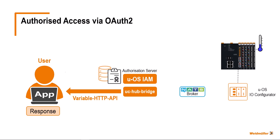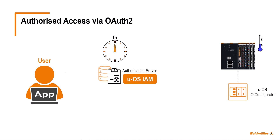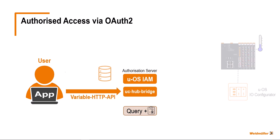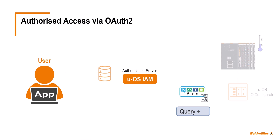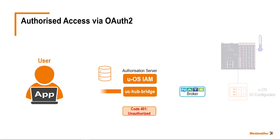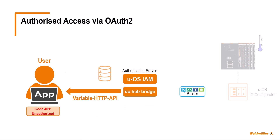But beware — this token only has a limited lifespan. By default, this lifespan in the UOS Data Hub is one hour. After this lifespan has expired, the token becomes invalid. If the app now attempts to start a query, this query is rejected by the NATS broker because no valid token can be found in the UOS IAM. In this case, the NATS broker will return an error code. The app must then request a new token from the UOS IAM for further queries using its credentials.